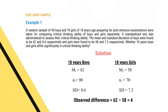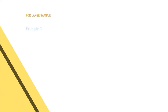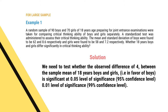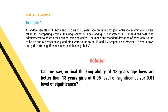For 18-year boys: mean M1 = 62, N1 = 90, standard deviation = 8.6. For 18-year girls: mean M2 = 58, N2 = 70, standard deviation = 7.2. The observed difference M1 minus M2 = 4. We need to test whether this observed difference of 4 in favor of boys is significant at 0.05 level of significance (95% confidence) and then at 0.01 level of significance (99% confidence).